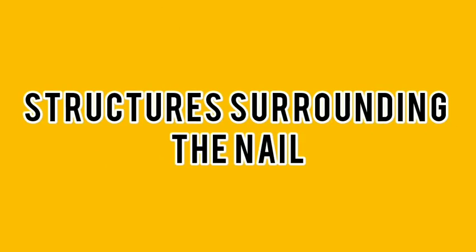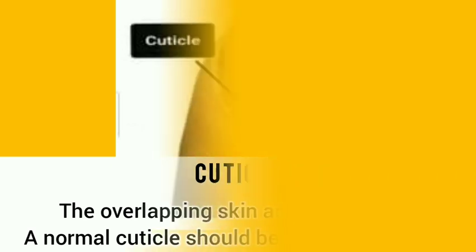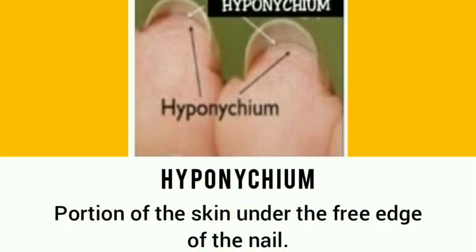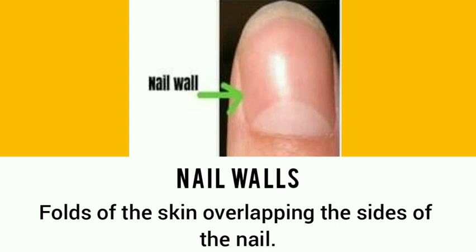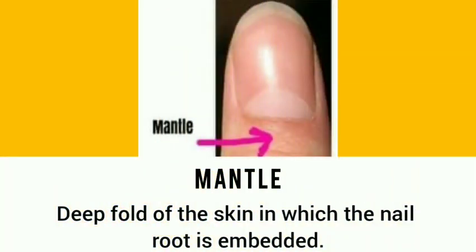Structures surrounding the nail: the cuticle is the overlapping skin around the nail; a normal cuticle should be loose and pliable. The eponychium is the cuticle extension at the base of the nail body which partly overlaps the lunula. The hyponychium is the portion of skin under the free edge of the nail. Nail walls are folds of the skin overlapping the sides of the nail. Nail grooves are slits or tracks in the skin at the side of the nail. The mantle is the deep fold of the skin in which the nail root is embedded.